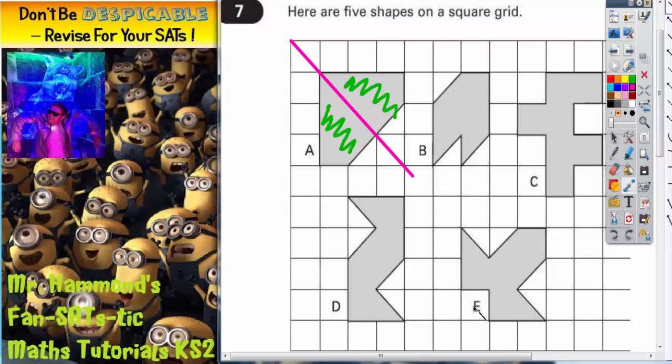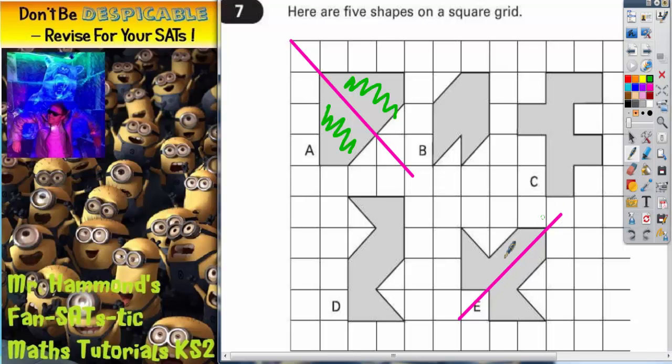Shape E has a line of symmetry through the middle there. Again, the two halves of the shape would fold over. So this half would fold over and fit exactly over this half.